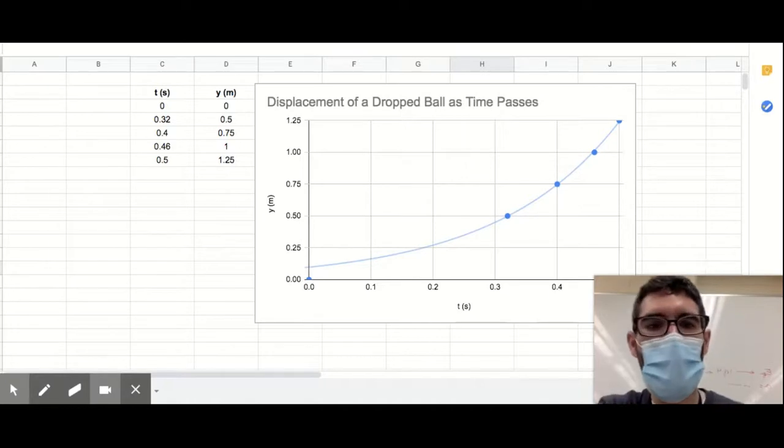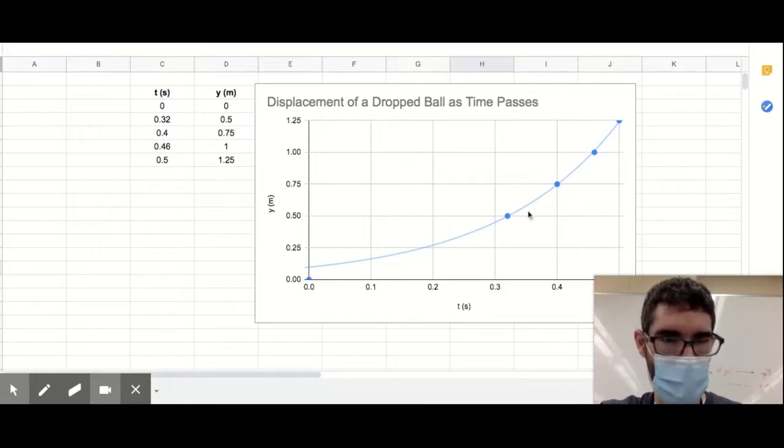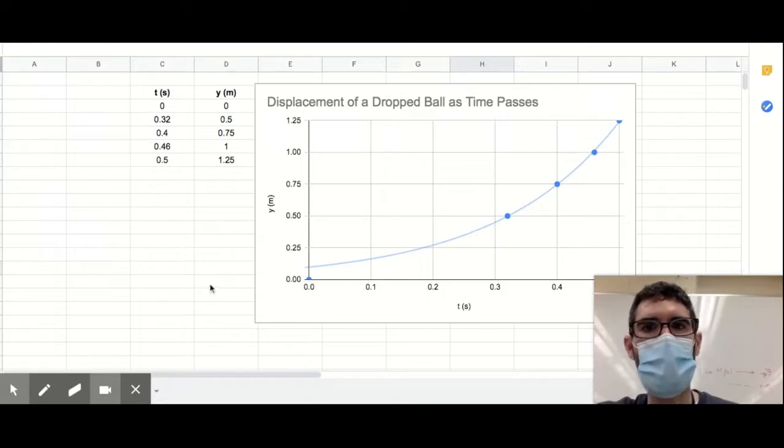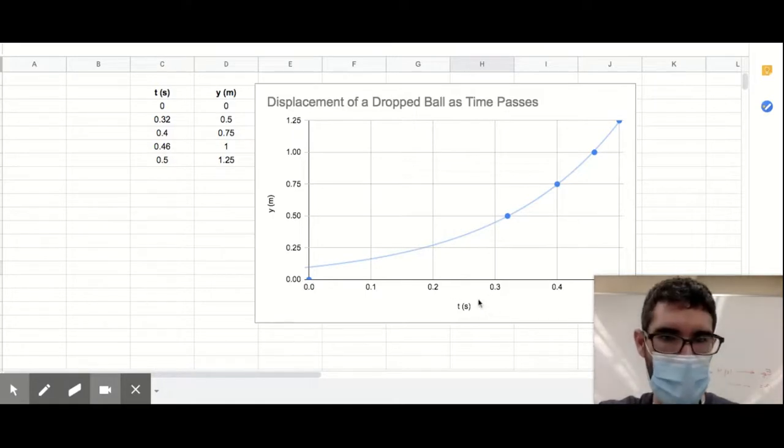So can you even get an acceleration off of a graph like this? And the answer is it's really hard to do that directly unless you have a model that fits this. So we have another way of doing this. What we can do is since we know that position is directly proportional to the square of time, what if we plot the square of time on the horizontal axis instead of just time?